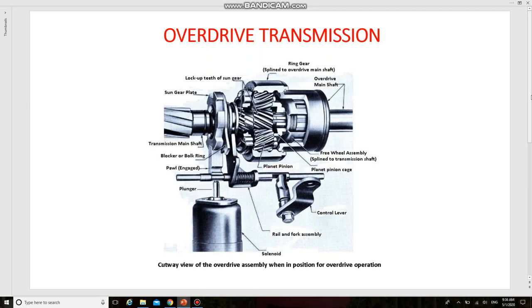Generally an overdrive is fitted to top gear only, but some sports cars have overdrive on second, third, and top gear, giving seven forward speeds. Overdrive is usually employed to supplement conventional transmission.